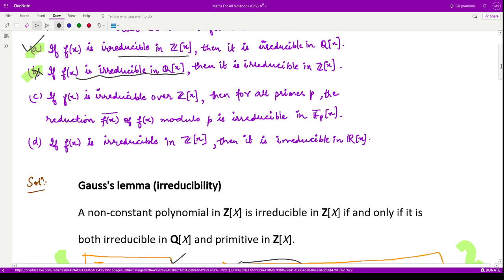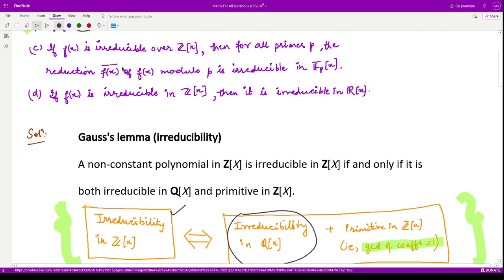Now let us look at the third option. They are saying if f is irreducible over Z[x], then for all primes p, the reduction f̄(x) of f modulo p is irreducible in F_p.